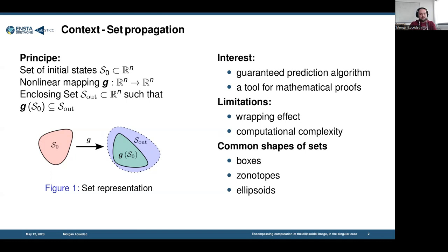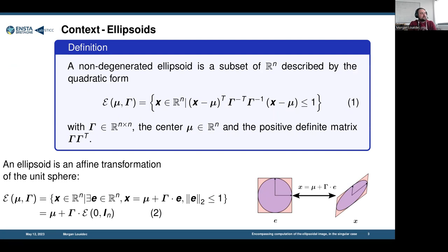Usually people consider non-degenerated ellipsoids and they use the quadratic form with the inequality to describe these ellipsoids. They are defined from a center mu and a shape matrix gamma and with the inequality here.